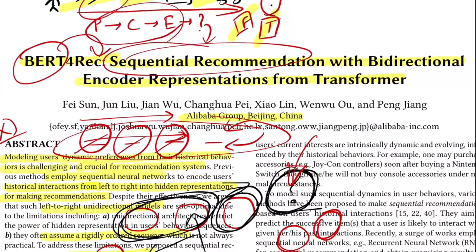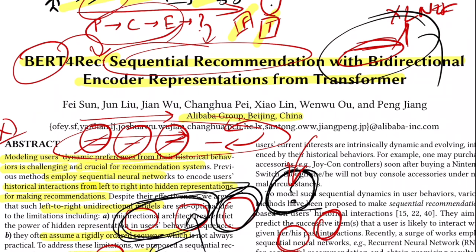It would have been interesting if the authors had also tried XLNet, because XLNet is autoregressive by default but uses a permutation language model, meaning on average the model sees all tokens to its left and right. This looks like an exact use case for sequential recommendation — autoregressive prediction at test time with bidirectional context learned during training via permutation.